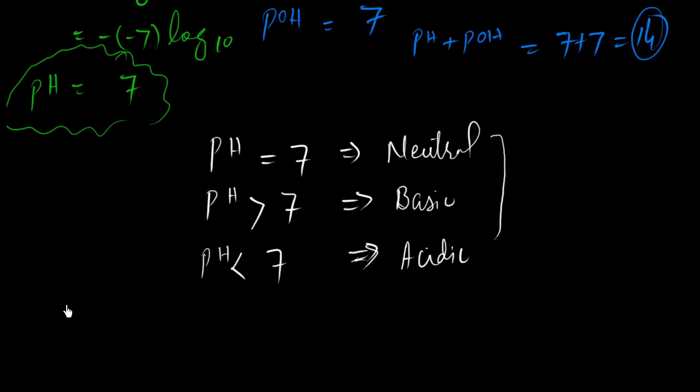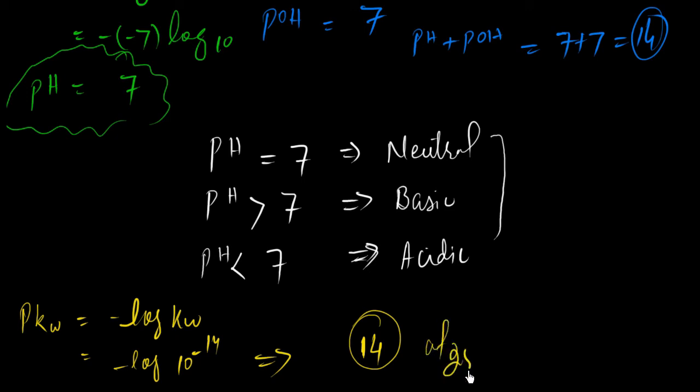In the same way, if we take a logarithm of minus log of Kw according to our last lecture about the ionic product, then pKw is obtained. It means that the pKw is equal to minus log of Kw. And from the value of the water, the Kw is 10 raised to power minus 14. If we take a minus log of 10 raised to power minus 14, then we just find 14. It means that a pKw of neutral water is 14 at 25 degrees centigrade.